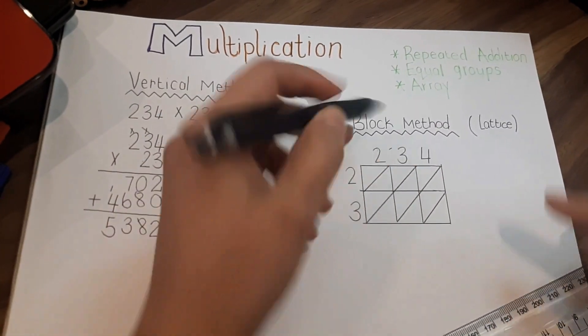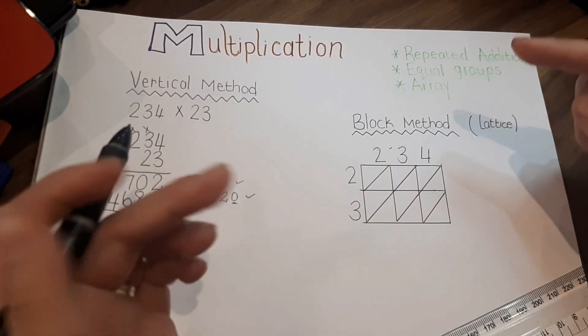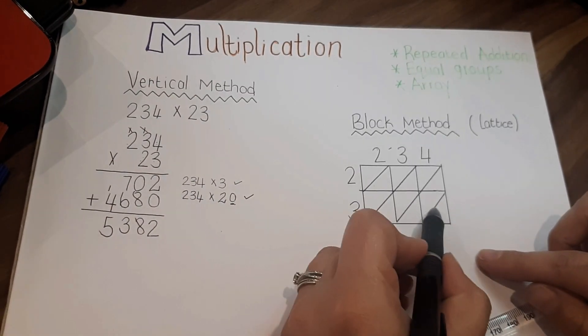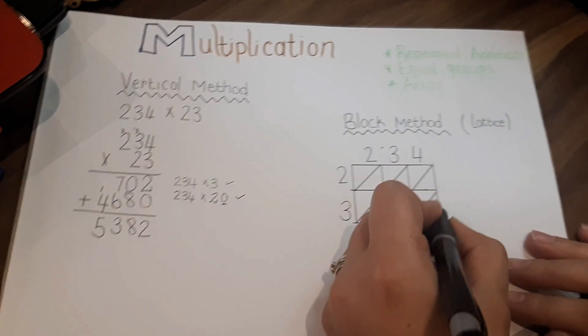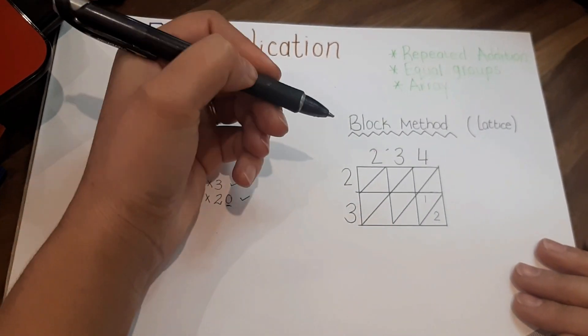You can start anywhere, but I usually like to start with the units, 3 times 4. So you're going to bring the digits together like this and multiply each digit with another. 3 times 4 is 12. We write the 2 and we carry over the 1.